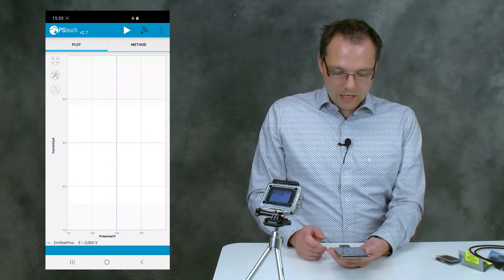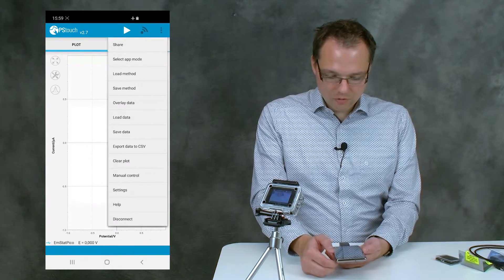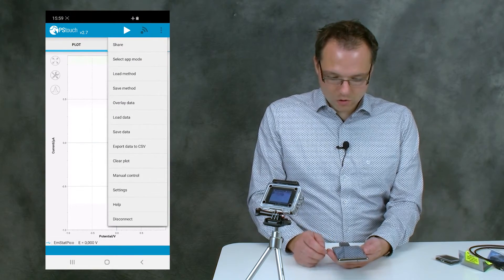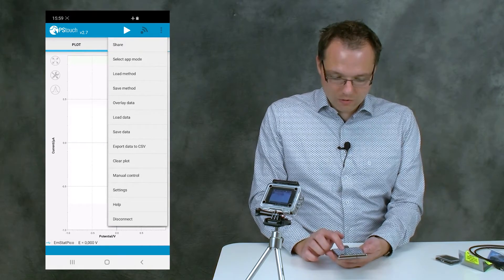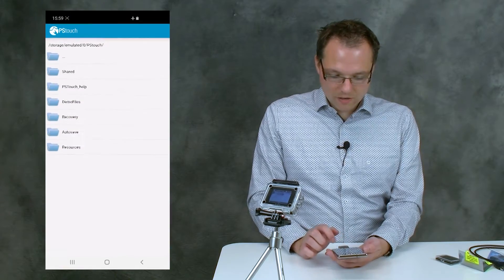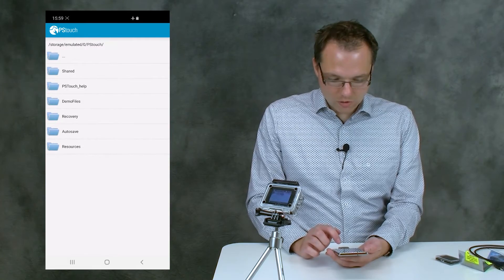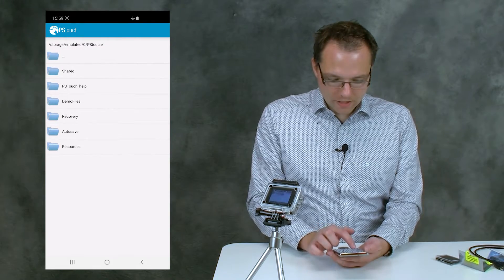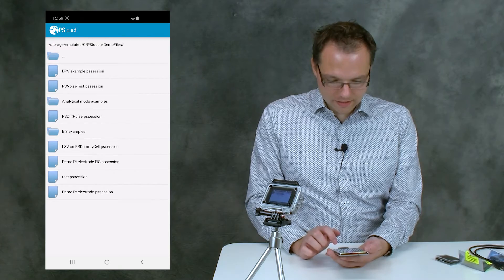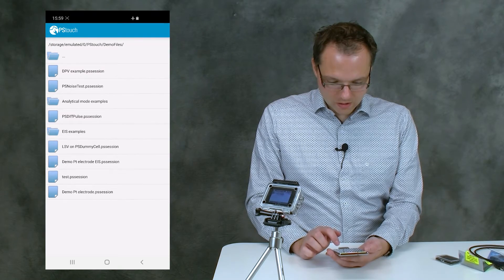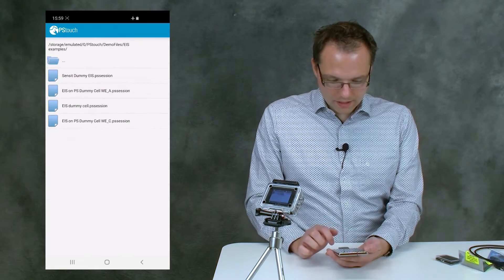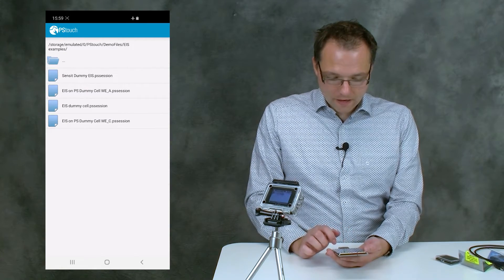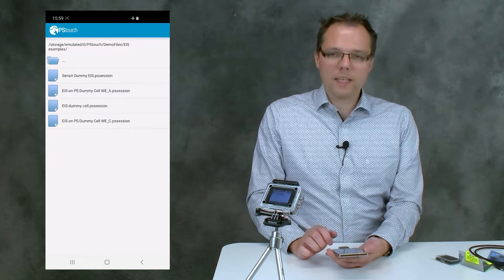Okay, now we want to do our first measurement. To do that, we just load a measurement that was done previously and use the measurement parameters for that. For that, you tap on Load Data, then on Demo Files, and on EIS Examples, and Sensit Dummy EIS.